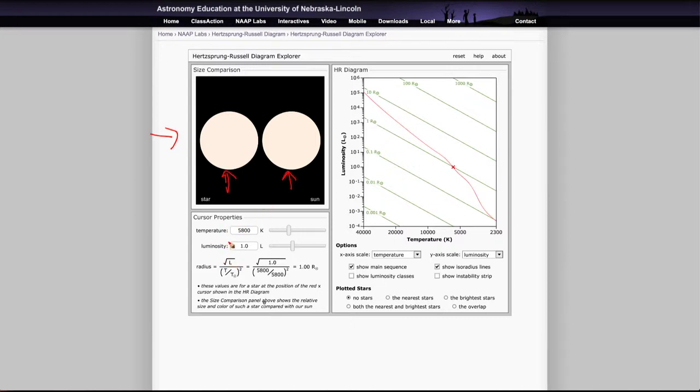You can change the properties of what is located at the cursor mark. You can change the temperature of the star - right now it's set for about 5800 Kelvin, the temperature of the Sun, and for one solar luminosity. It will do the calculation for you using this equation to determine what the radius of that star will be. In this case it will be one solar radius because our star is the same as the Sun, but we'll be able to change that as well.